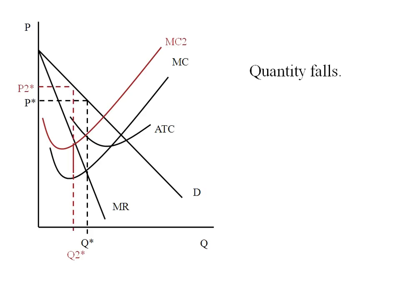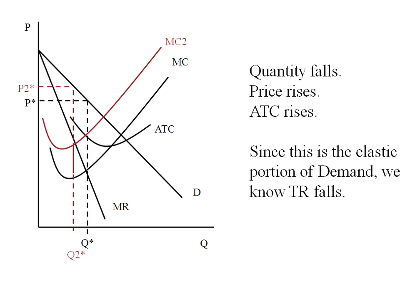So in this case we see that the firm's optimal level of output has fallen, but because they're producing less and demand hasn't changed, their price rises. We also are moving up and to the left on our average total cost curve. Now since this is the elastic portion of the demand curve, we know that total revenue is going to fall.